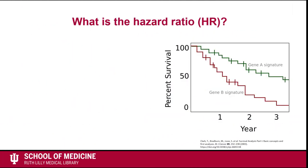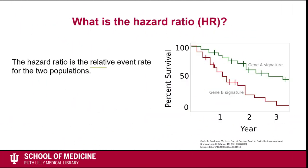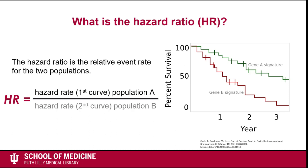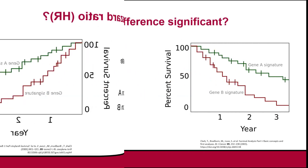The hazard ratio is the relative event rate for the two populations. It is determined using the Cox Proportional Hazards model. The hazard ratio, or HR, is the hazard rate of the first curve — population A — divided by the hazard rate of the second curve — population B.